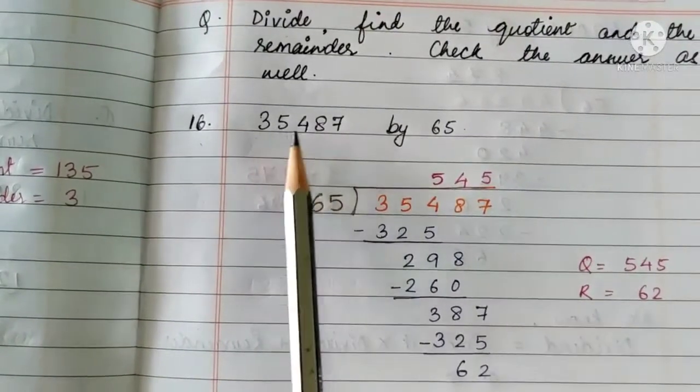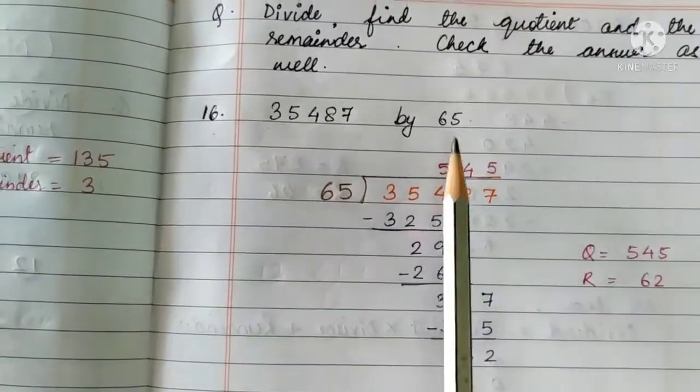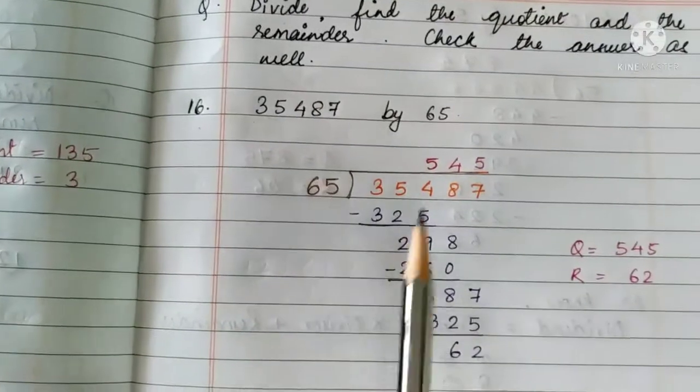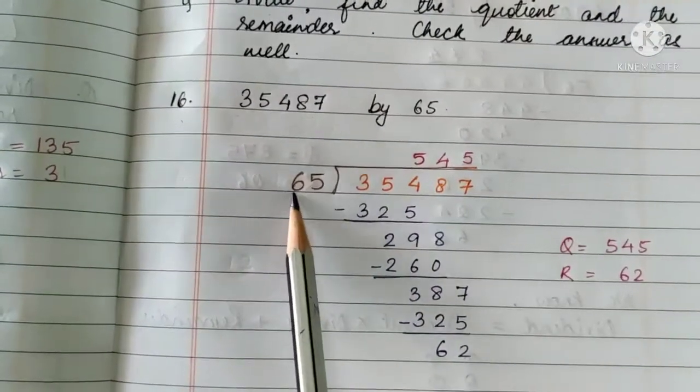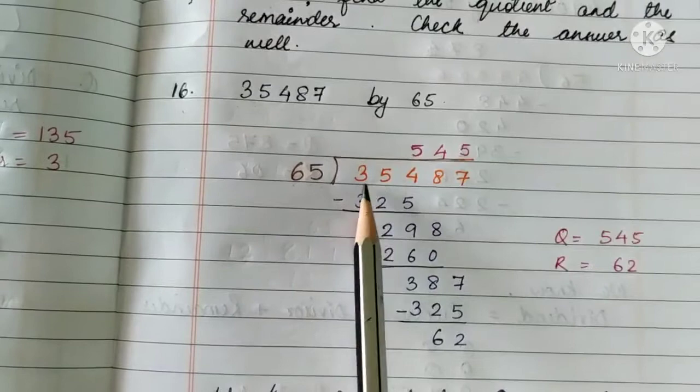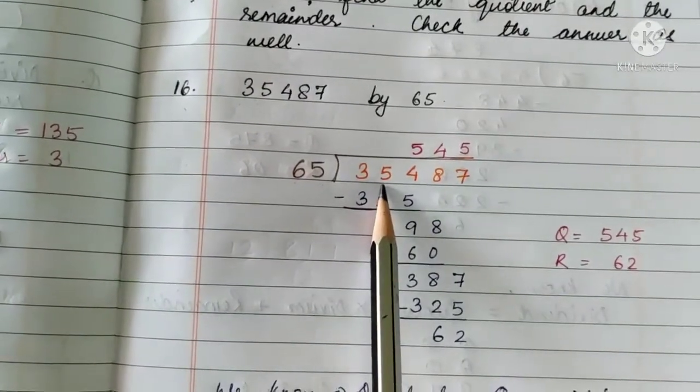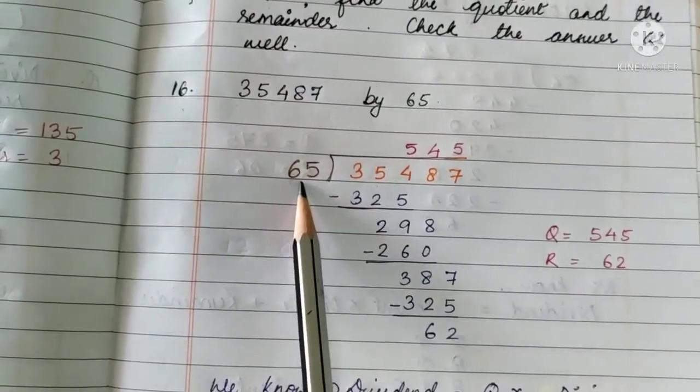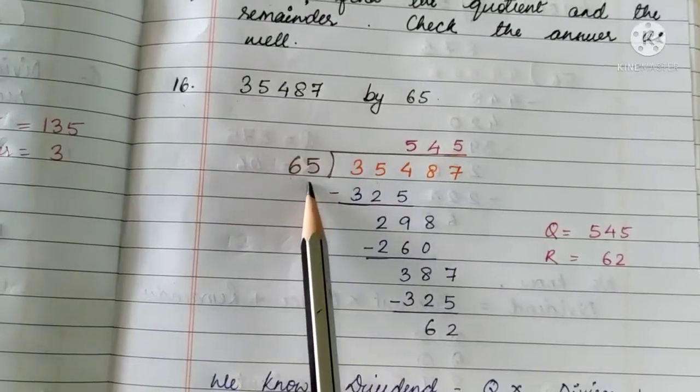Here, 35,487 is our dividend. 65 is our divisor. As our divisor is a two-digit number, we first compare the leftmost two digits of the dividend with the divisor. 35 is smaller than 65.